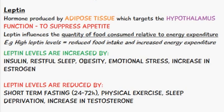When we have high leptin levels we have a reduced appetite, so we don't eat as much food, but we increase our energy expenditure. Increased leptin levels are usually due to insulin, restful sleep, obesity, emotional stress, and increases in estrogen.